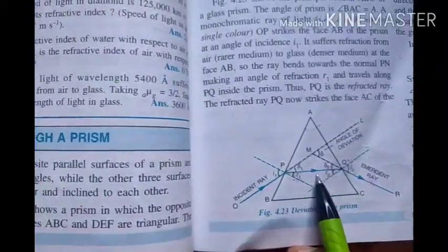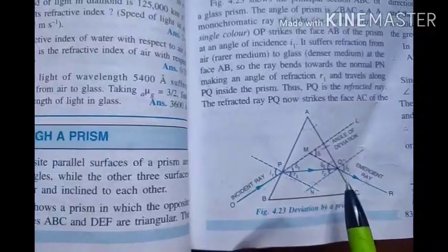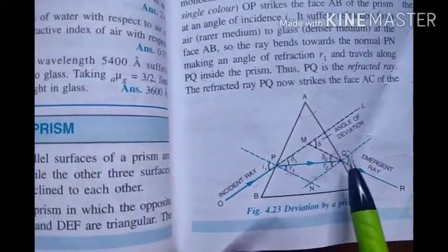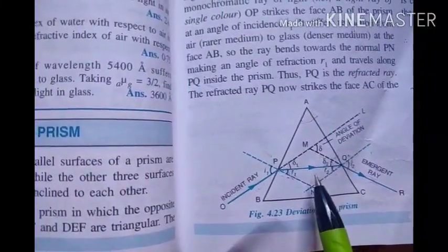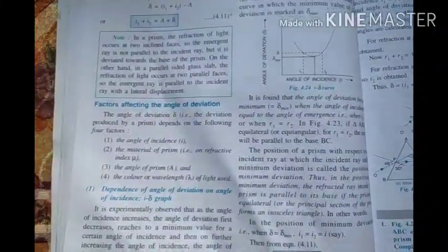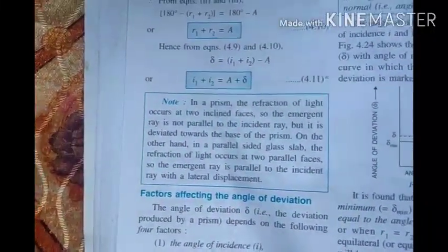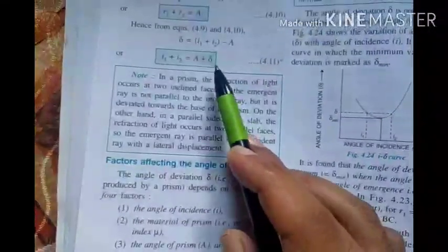So whenever the refracted ray through the prism becomes parallel to the base, the angle of deviation delta becomes minimum. Equivalently, when the angle of incidence equals the angle of emergence, the deviation is minimum — these are the same condition. Using the relation i1 plus i2, when they are equal it becomes 2i, and from this relation we can find delta minimum.